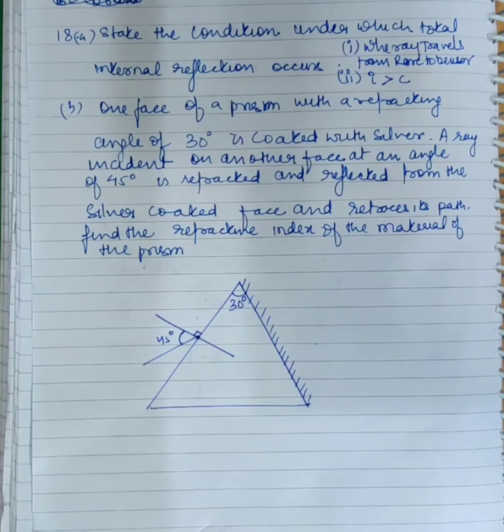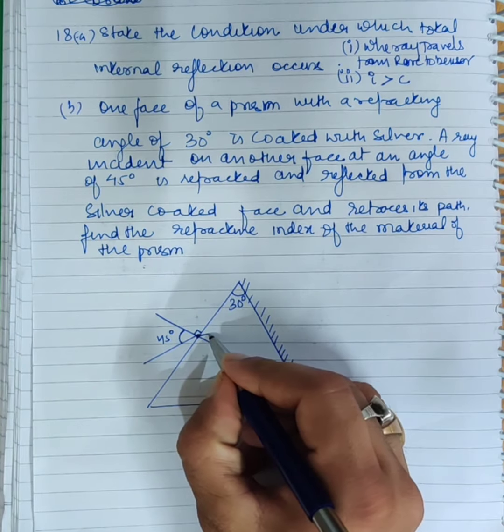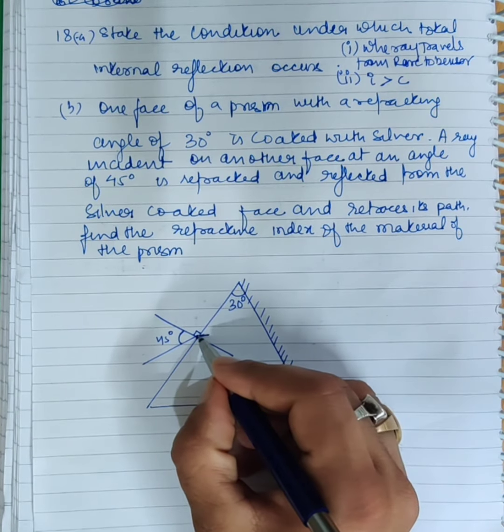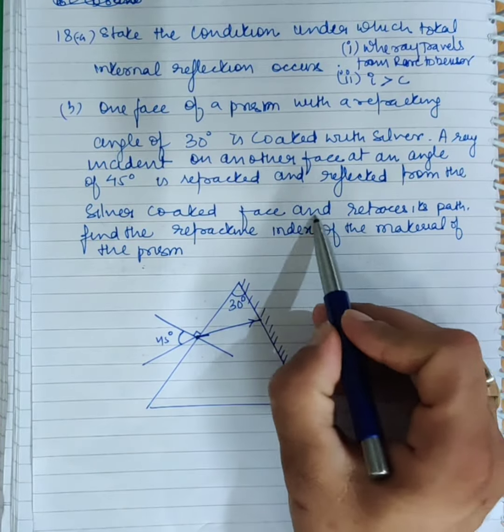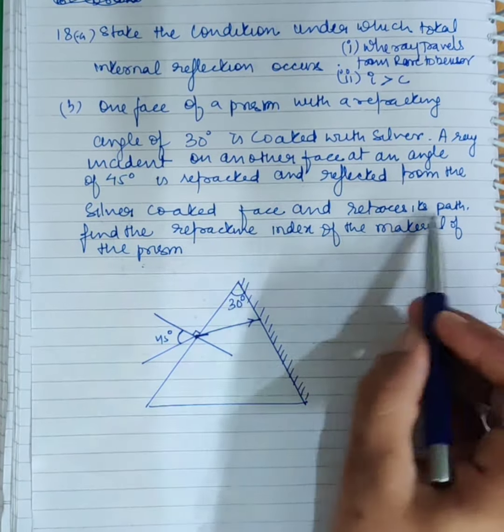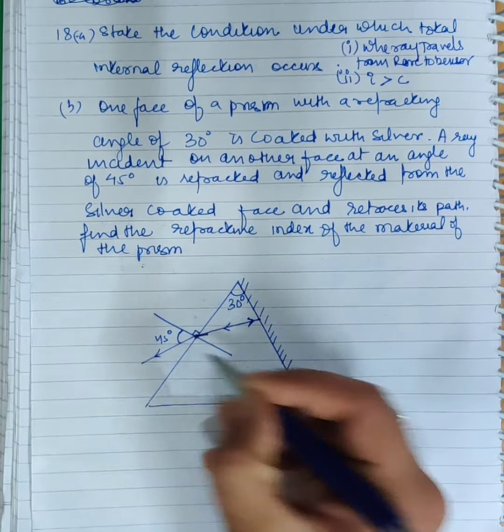It is refracted and reflected from the silver-coated face such that it retraces its path. It comes back. This is only possible if it hits at 90 degrees. Then it will reflect back and return.